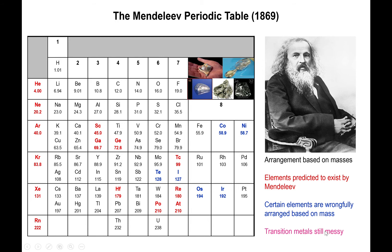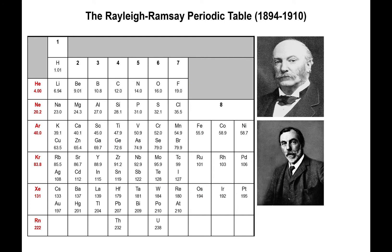But the transition metals are still messy in these tables — not properly arranged, with certain cells actually containing two elements. So this is not the best table; it's definitely not the final version. In addition, there are some elements still missing in Mendeleev's table, specifically the noble gases: helium, neon, argon, krypton, xenon, and radon.